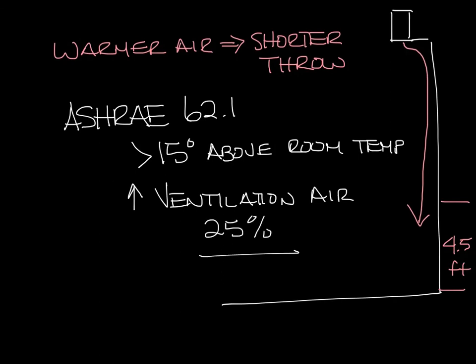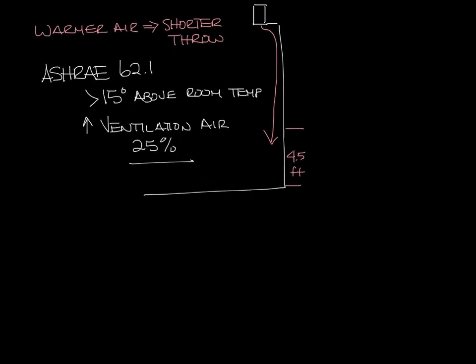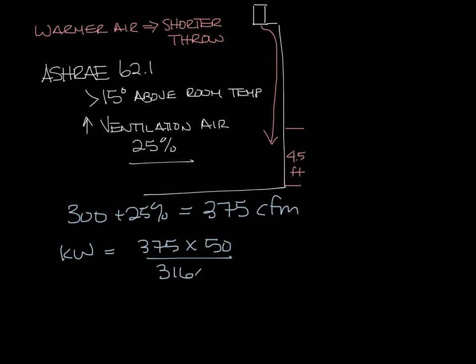If you have more supply air you'll have to have a higher KW to maintain that same warmer temperature. Let's make a little room over here. So let's say for some reason you want 105 degree air. So you have to bring in 25% more air that equals 375 CFM now. So the KW equals 375 times 50 because your differential is higher divided by 3160 and that equals about 6 KW.